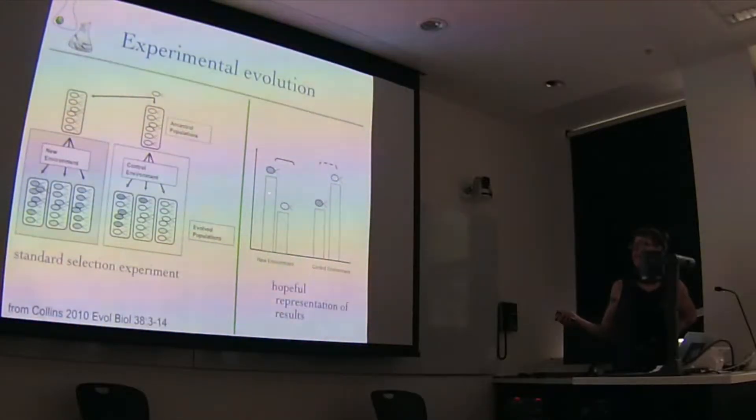Here's how we hope the evolution experiment will pan out after we've devoted a year or three of our lives to it, which is if we measure some trait such as growth rate or chlorophyll content in the new environment, we compare the evolved populations from the new environment to evolved populations from the control environment, and we see that their trait value is different. We grow them both in the new environment. This is an example of adaptation, if this is growth rate, where populations evolved in the new environment grow faster in the new environment than populations that evolved in the control environment.